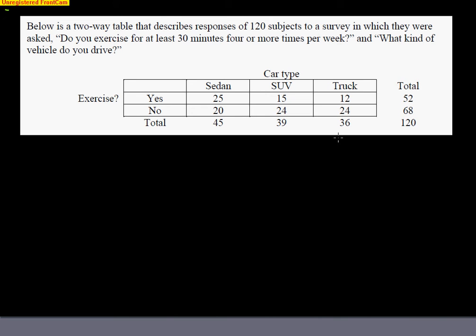However, exercising and sedan — there's some overlap there. Those are not mutually exclusive. There are 25 people who exercise and also have a sedan. So make sure you understand the idea of mutually exclusive. The probability that somebody exercises: 52 people exercise out of 120. What's the probability that somebody has an SUV? 39 people have an SUV out of 120.